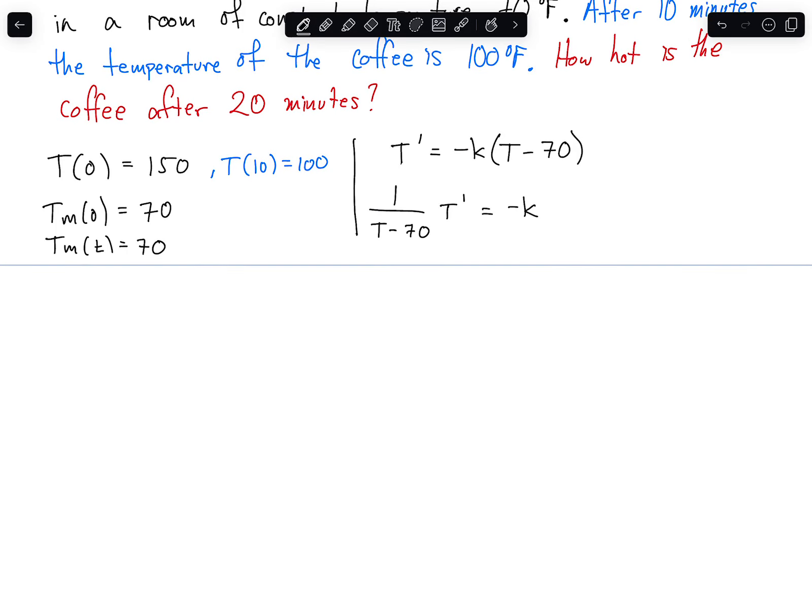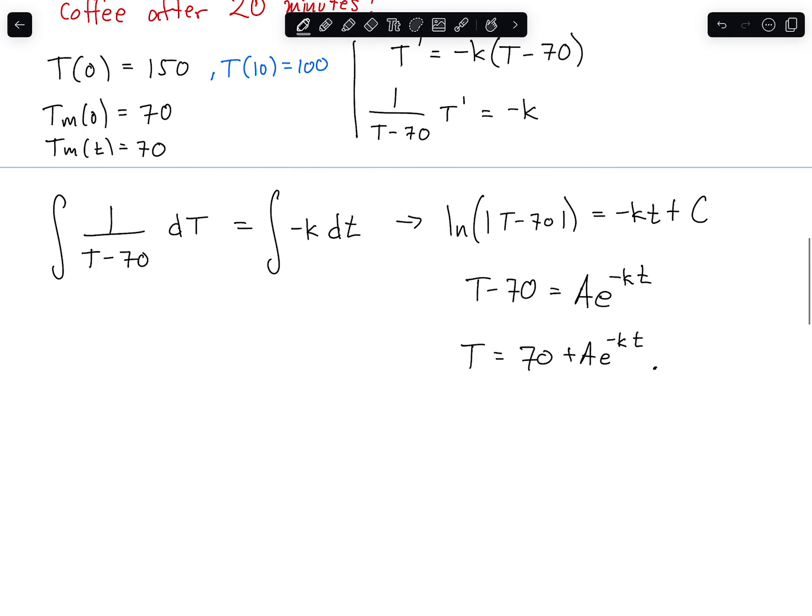We can write this as 1 over capital T minus 70 times T prime is equal to negative K. So we can split that up into the integral of 1 over T minus 70 dT is equal to the integral of minus K dt for time. This gives us the natural log of the absolute value of T minus 70 is equal to negative KT plus C. So T minus 70 is equal to A, e to the minus KT. So T is equal to 70 plus A, e to the minus KT. Great.